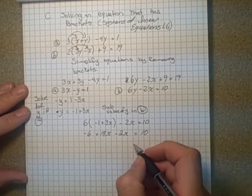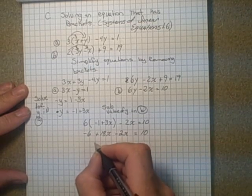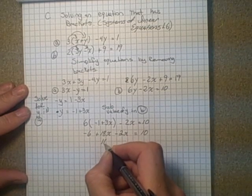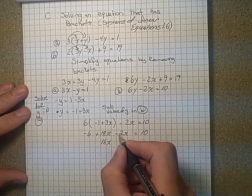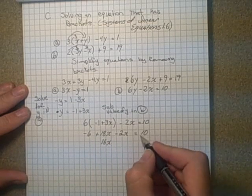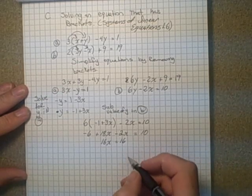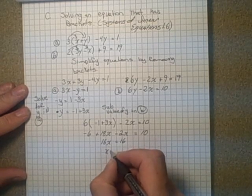So add 6 to both sides. So we would have, well, let's first reduce the x's. This would end up being 16x. And this, if I add 6 and add 6, equals 16. So we can see that x, if I divide by 16, is going to equal 1.